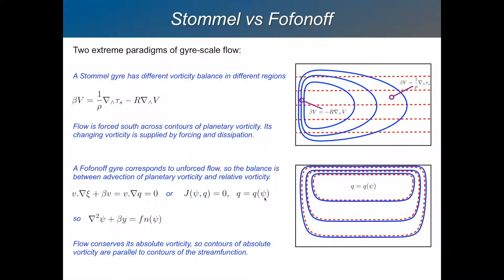And remember that q, what we're calling our potential vorticity in this barotropic case, is the relative vorticity plus beta y. And that is a function of psi. We don't know what that function is, but we can say that it is a function of psi. And that's the kind of opposite extreme view of the ocean circulation compared to the forced dissipative Stommel gyre. And that's called a Fofonov gyre. And we imagine that it gets into this state. The ocean circulation gets into this state due to the action of transient eddies modifying the potential vorticity field.